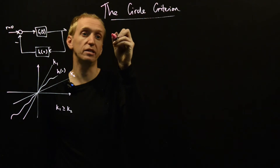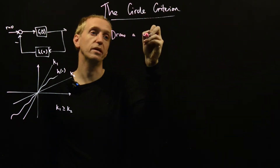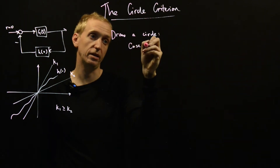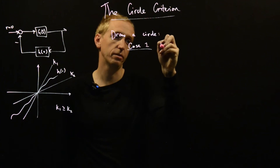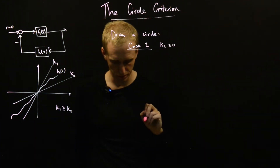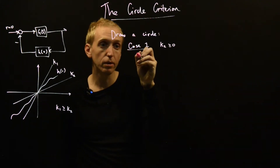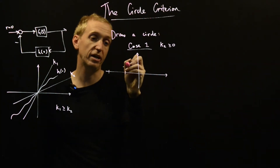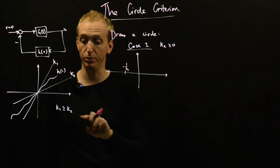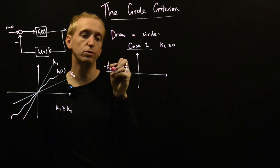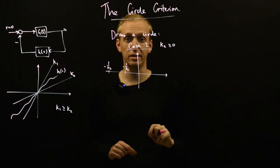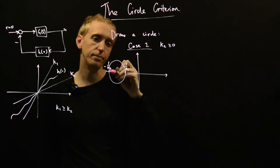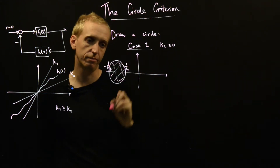To apply the circle criterion we have to draw a circle and there are two important cases. Case 1 is when k2 is greater than or equal to 0. We draw our circle like this — this is the one we actually saw before. Here we have minus 1 over k1, because k2 is positive so k1 must be positive, and then here we have minus 1 over k2. We draw our cuttings of the negative real axis like this and then draw a symmetric circle on top, and this becomes our forbidden region.